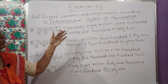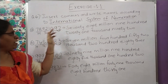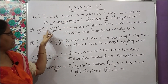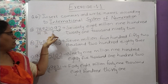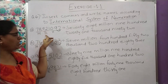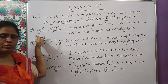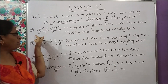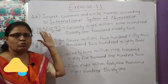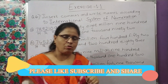Ab yeh jo international system hai, ismein number names likhoge toh pehle comma laga do — 3-3 ke baad comma. Yeh hundred, yeh teen number ke neeche thousand, aur uske baad jo number hai uske neeche million — aise likh do. Phir number name likhoge toh tumhari koi bhi mistake nahi hogi.